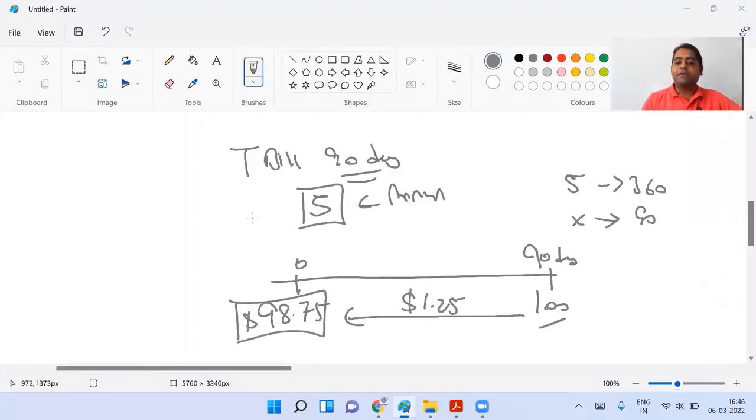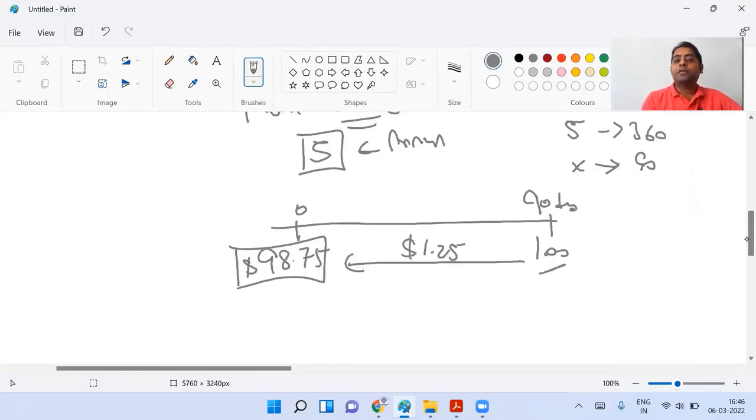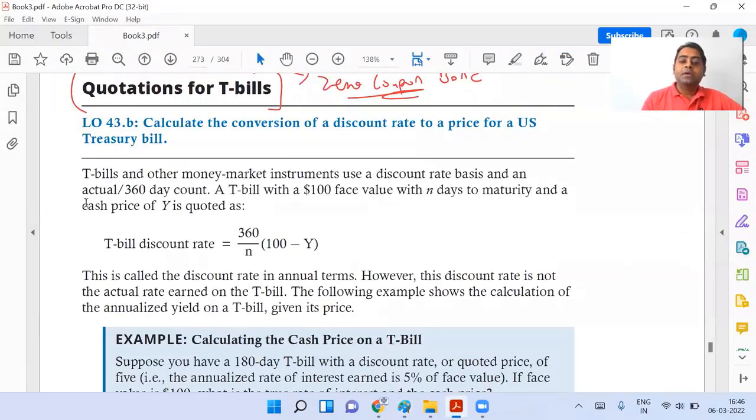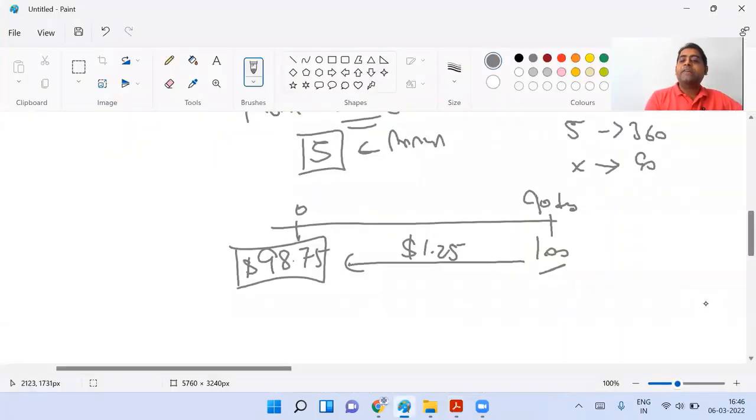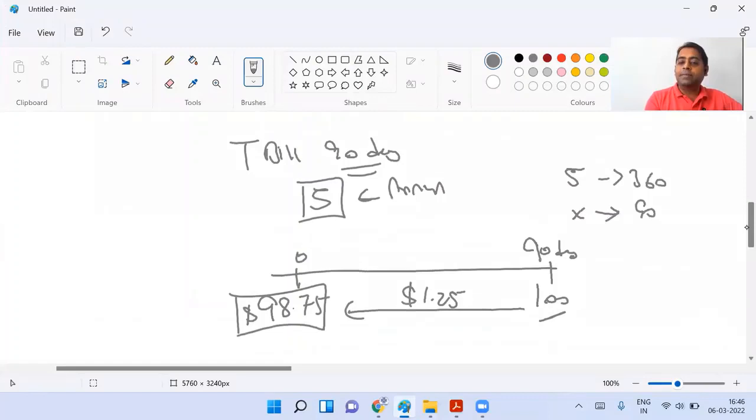98.75. If you are able to understand this concept, let us go to the book now and let us see what they are trying to highlight. First of all, this discount rate is the annualized rate that we see. This is the cash price that they want to find. Suppose if I go to this example.